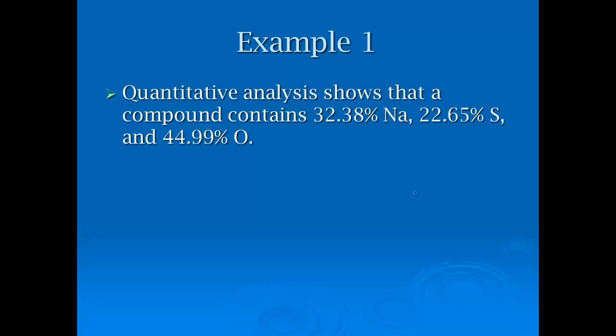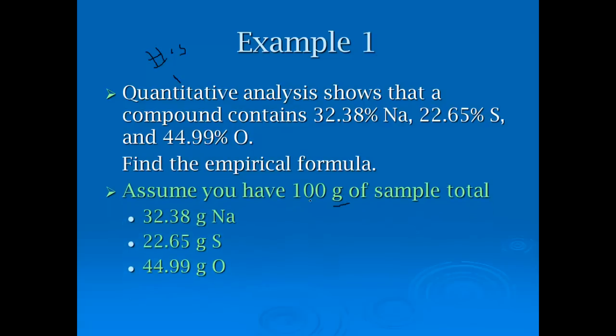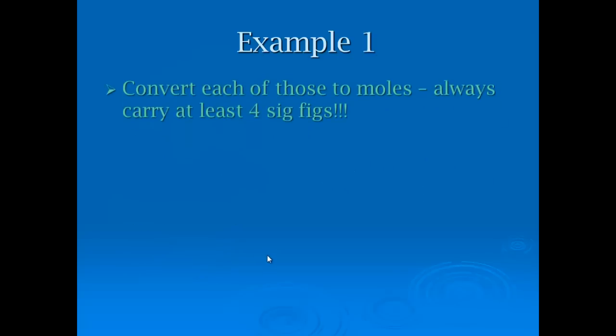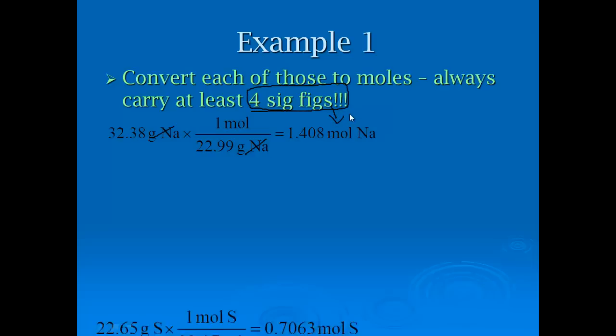Quantitative analysis shows that a compound contains 32.38% sodium, 22.65% sulfur, 44.99% oxygen. We need to find the empirical formula. The first thing we're going to do is pretend we have grams. Get rid of these percent signs and substitute them with grams, so we can go grams to moles. The first step is to go grams to moles for each element. Sodium, 32.38 divided by the molar mass gives 1.408. Always carry at least four significant figures.